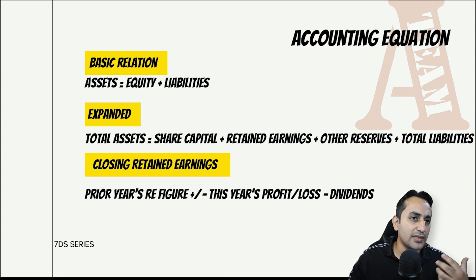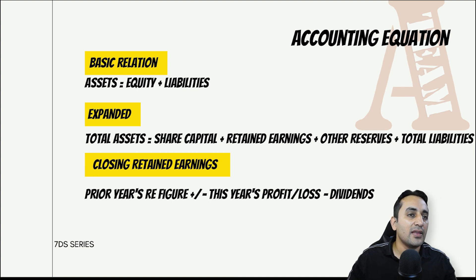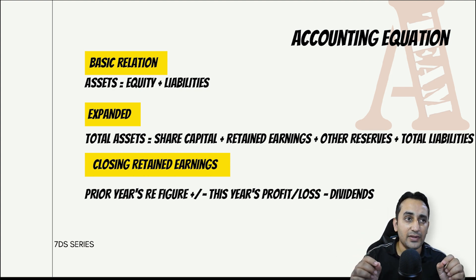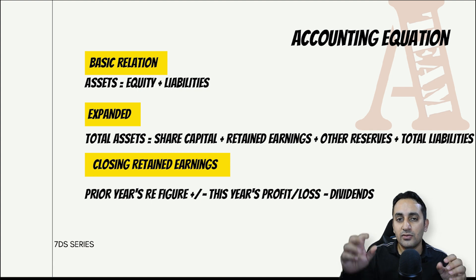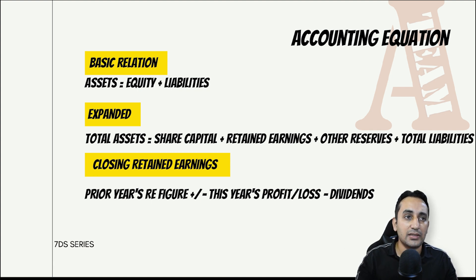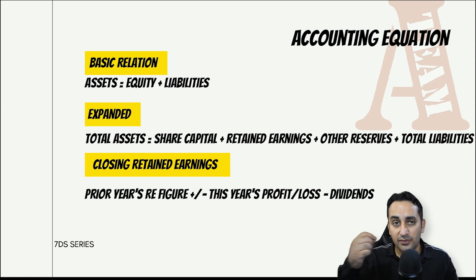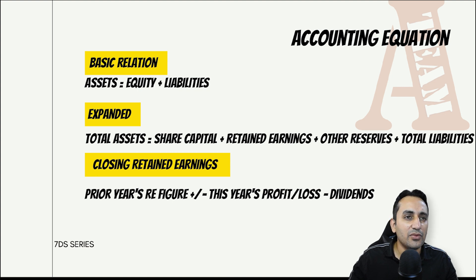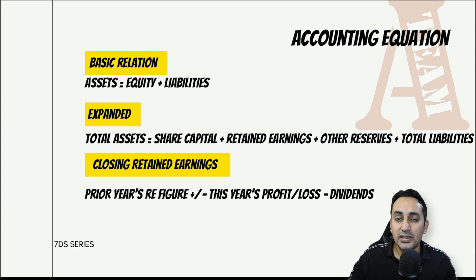ऐसा complex question यहाँ नहीं आता। Closing retained earnings में शुरू का retained earnings होता है जो accumulated profit होता है। उसे current year के profit से बढ़ा सकते हैं, loss हो तो घटा सकते हैं, और dividend pay किया तो dividend से profit कम हो जाता है। यह basic conceptual चीज़ें हैं जो हम already जानते हैं - रटने की ज़रूरत नहीं।